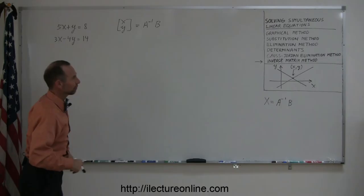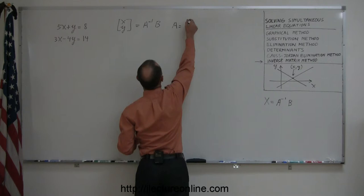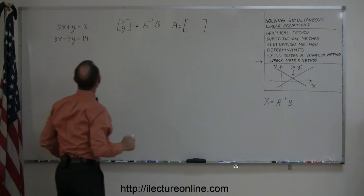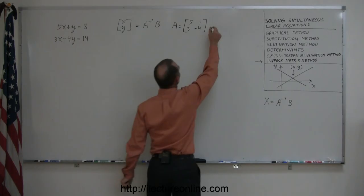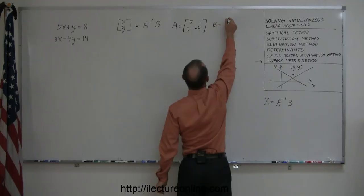To figure out what those things are, we can define the matrix A as simply the coefficients of the x and the y variables here. So this is 5 and 1, 3 and negative 4. So that is defined as the matrix A. And then the matrix B can be defined as the numbers on the right side of the equation. So this is 8 and 14.